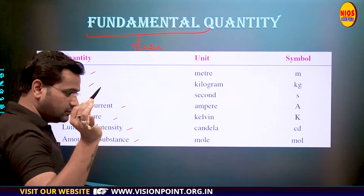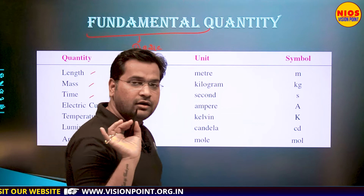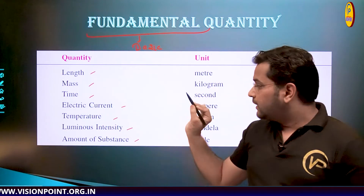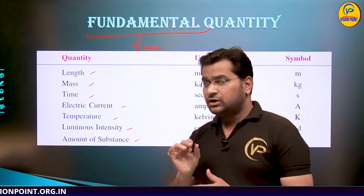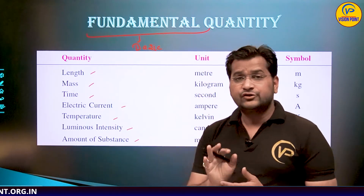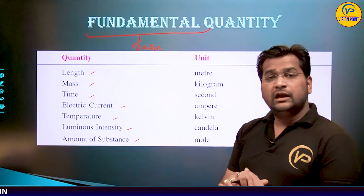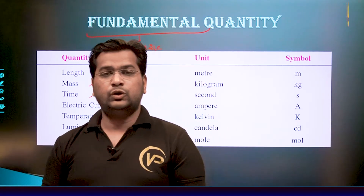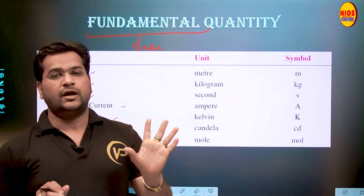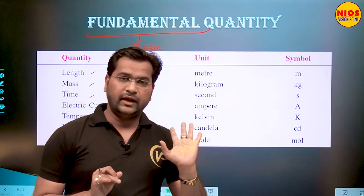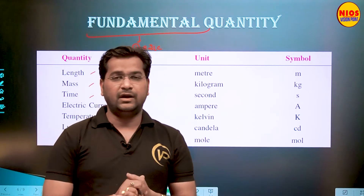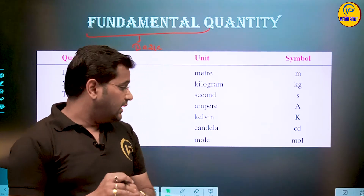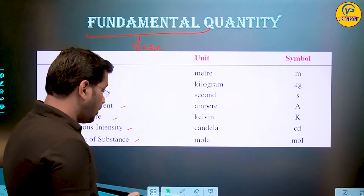The seven fundamental quantities are: length, mass, time, temperature, electric current, luminous intensity, and amount of substance. यह सात fundamental quantities हैं।